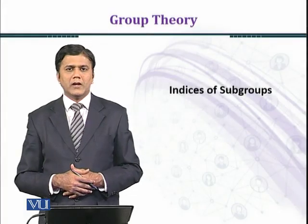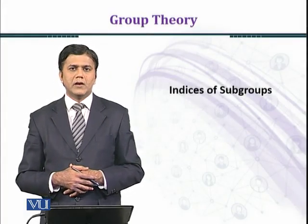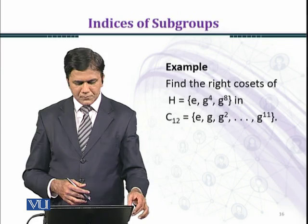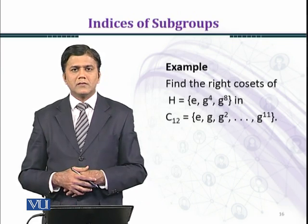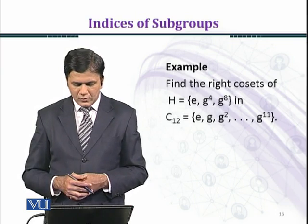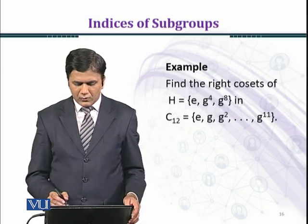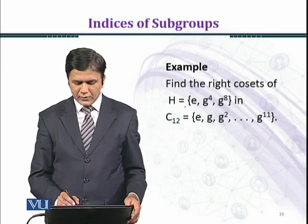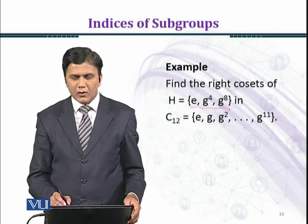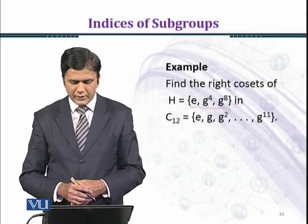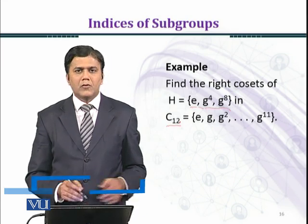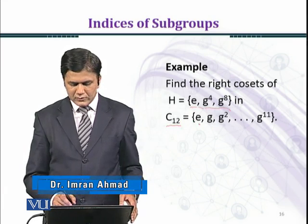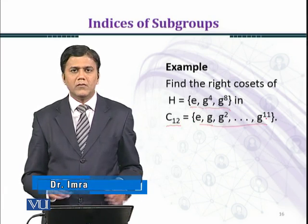In this module we shall state an important result regarding indices of subgroups. Let's consider first an example: find the right cosets of the subgroup H which contains the identity element, G raised to power 4, and G raised to power 8, in the cyclic group of order 12 which contains E, G, up to G raised to power 11.